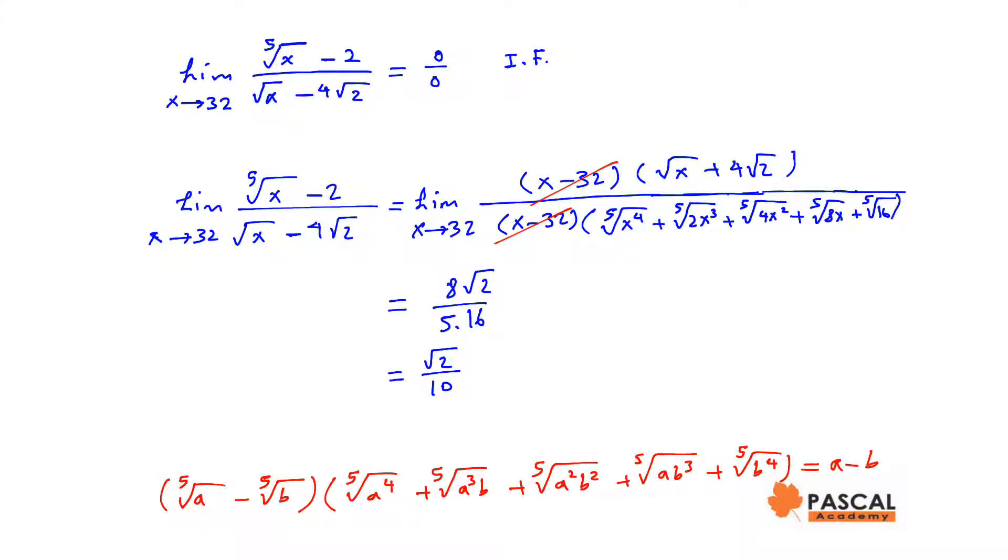In this video, we are going to find the limit of 5th root of x minus 2 over square root of x minus 4 square root of 2 as x approaches 32.